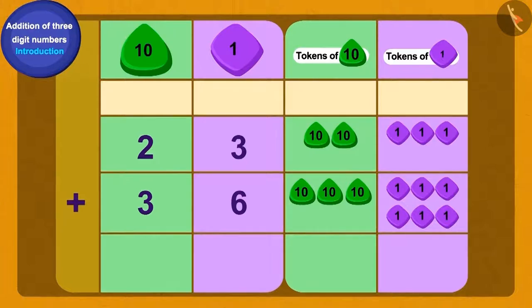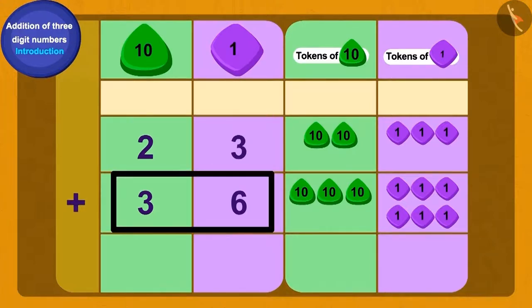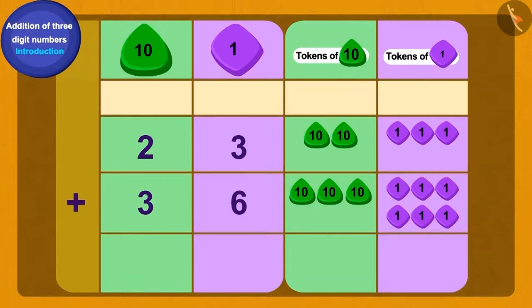Do you remember you learned in class 2 about how to write two digit numbers using the method of tokens of tens and ones? We can write 23 and 36 using tokens like this.